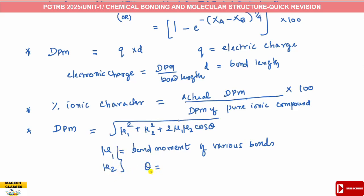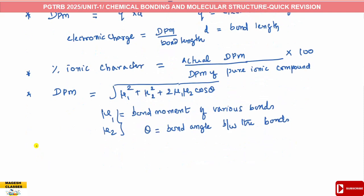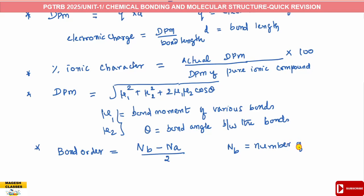The cosine term accounts for the bond angle between the bonds. Then bond order: bond order is equal to the number of bonding electrons minus the number of anti-bonding electrons, divided by 2. Here N_b is the number of bonding electrons and N_a is the number of anti-bonding electrons.